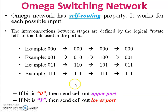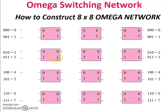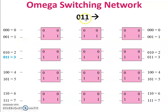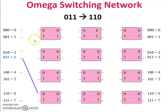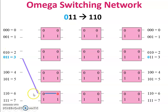To construct an 8×8 omega network, there are three levels — level one, level two, and level three. Consider source 3 (binary 011) wanting to reach destination 011. Check: first bit is 0, so perform circular left on 011 to get 110. Since the first bit is 0, the cell goes through the upper port of the switch and reaches output 0. The destination is 011, and the most significant bit (0) is determined by the level one switches.